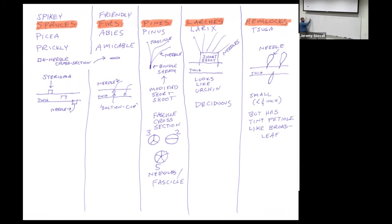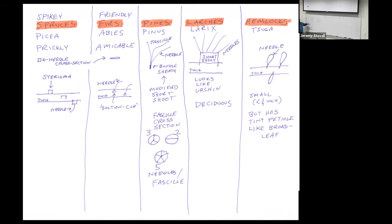With spruces, the genus is Picea, and the needles are prickly. If you grab spruce needles, they're very pointed at the end — short, about half an inch — and they'll prick you. Firs are in the genus Abies. Firs and spruces look very similar, but fir needles are amicable — friendly. A good mnemonic: Abies = amicable, Picea = prickly. If you grab needles that look like spruce needles on a fir, they don't prick you; they're not pointy.